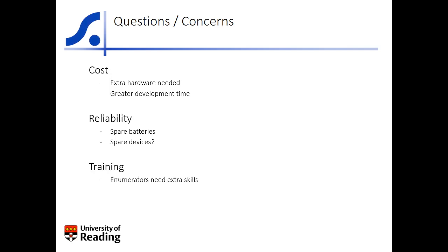Another issue is that of training. Enumerators need to be familiar with any data collection system, which may involve teaching extra skills to effectively manage their mobile device and their digital data. These issues all require extra thought but are not insurmountable.